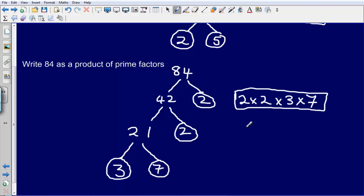There is another way that we could write this. We could also tidy this up a little bit by saying that 2 times 2, that's the same as 2 squared times by 3 and times by 7. And that's about it.